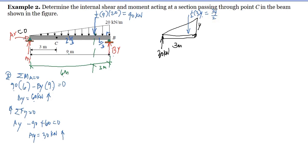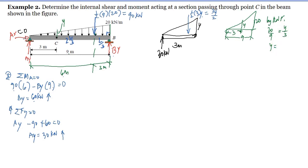To find y, we use ratio and proportion. Since the full height is 20 at the full length of 9, and y is the height at 3 meters: 20 is to 9 as y is to 3. So y equals 20 over 3. Substituting back, the resultant of the load on the left portion is 3 over 2 times 20 over 3. The 3s cancel, giving us 20 divided by 2, which equals 10 kilonewtons.